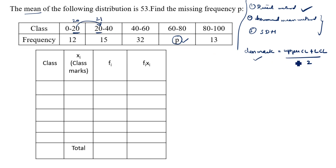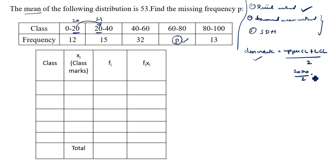If the class ends with 20 and starts with 21, we can't use this method — there is another method we will see in the next problem. For upper class limit 20 and lower class limit 0: (20 + 0) / 2 = 20 / 2 = 10. So the first class mark is 10.